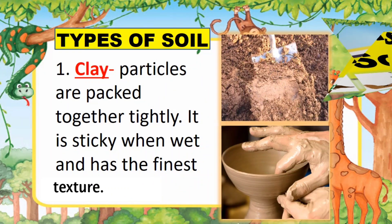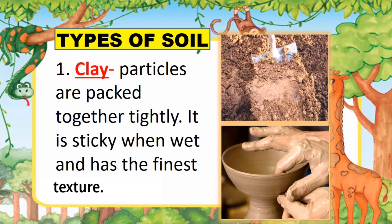There are three main types of soil. First is clay. Particles are packed together tightly. As you can see in the picture, it is sticky when wet and has the finest texture. This type of soil is ideal if you want to make clay pots.